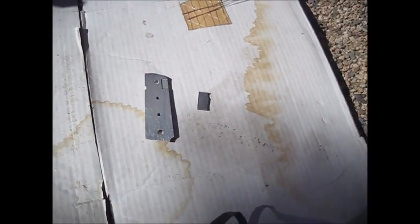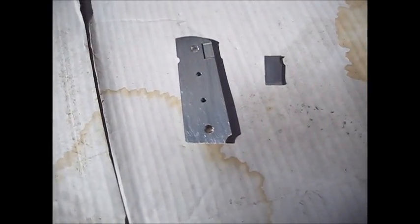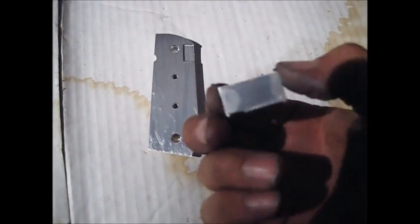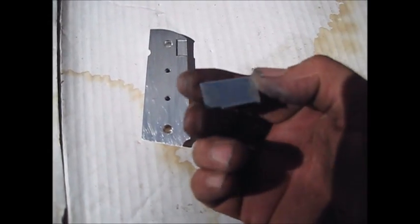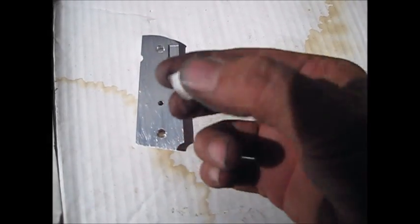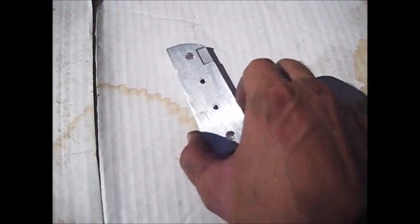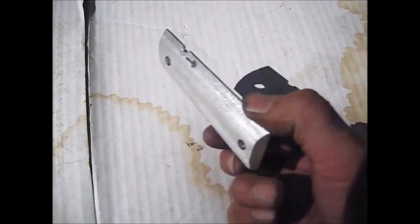Alright, here's an experiment that I've wanted to do for a long time. This is 7075 aluminum - I sanded it so it's kind of shiny. And this here is a grip that I make for the 1911.